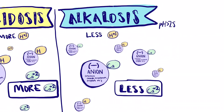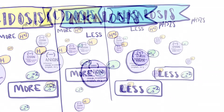In alkalosis, there are fewer hydrogen ions, or more anions. Calcium, being basically a second-class citizen, finally has room and can bind with the anions. This leaves less ionized calcium in the serum.